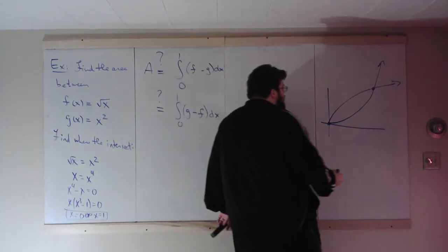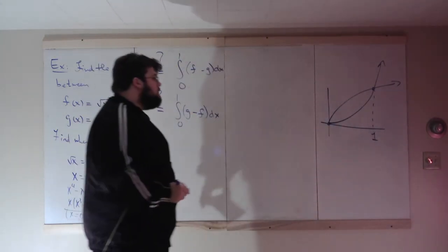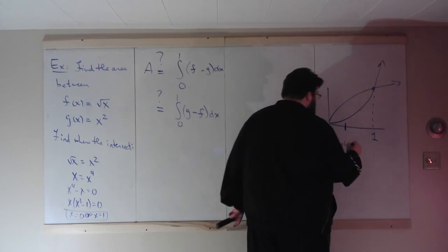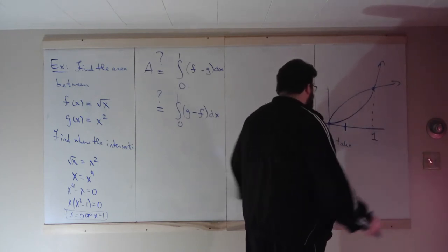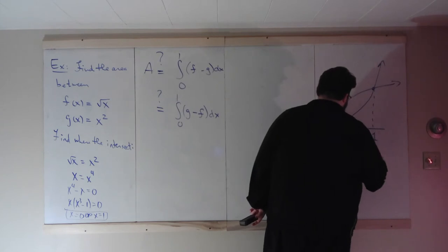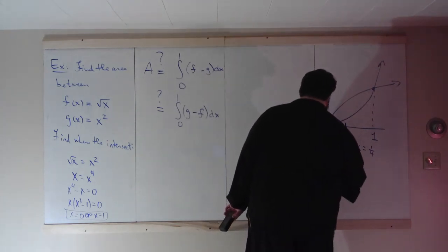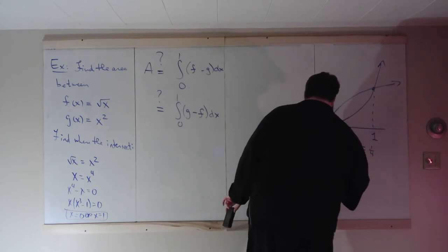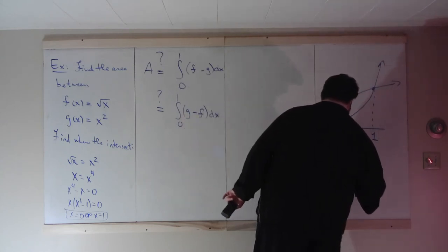But how can we figure out algebraically which one is larger than the other on this interval? Let's take a point inside here. You could take any point inside 0 to 1, like a half or three quarters. I'm going to take X equals a quarter because the algebra will work out nicely. What is F of a quarter? F of a quarter is a half. What is G of a quarter? G of a quarter is 1 16th.